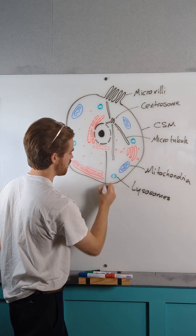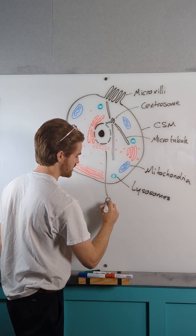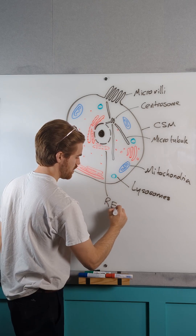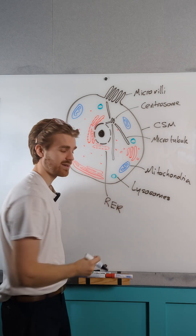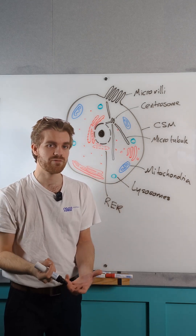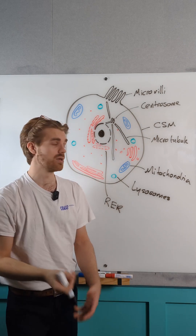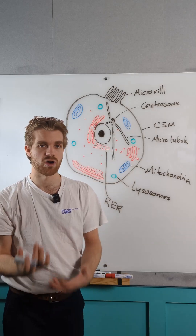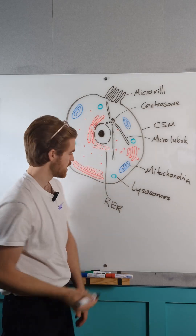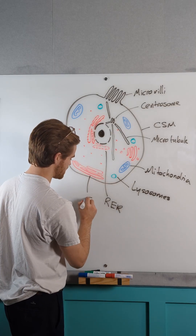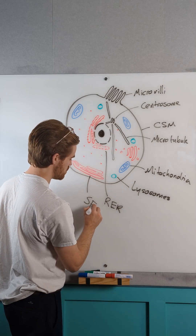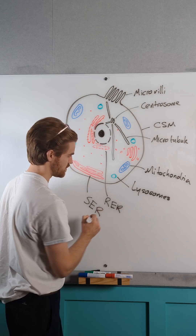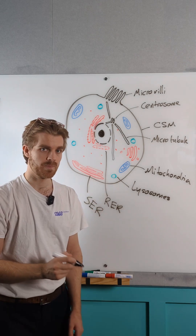I can see we've got some rough endoplasmic reticulum here. I can recognise that's the rough endoplasmic reticulum because it has these little dots, our ribosomes, on it and that must mean that down here is our smooth endoplasmic reticulum.